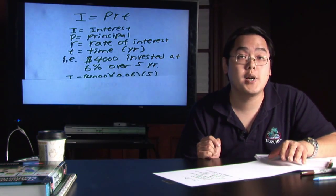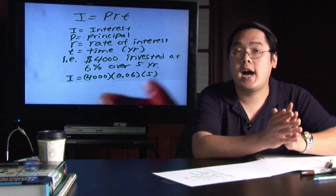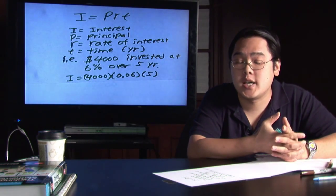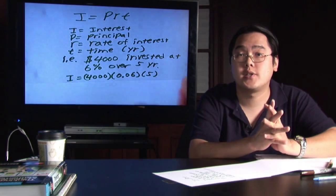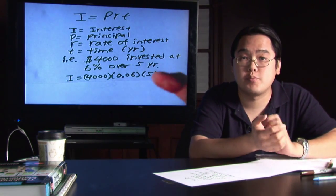But if you plug in those numbers where they belong, you will have I equals 4,000 times 0.06, shifting the decimal, then times 5. And basically, just let your calculator do the work there. Just plug them in.